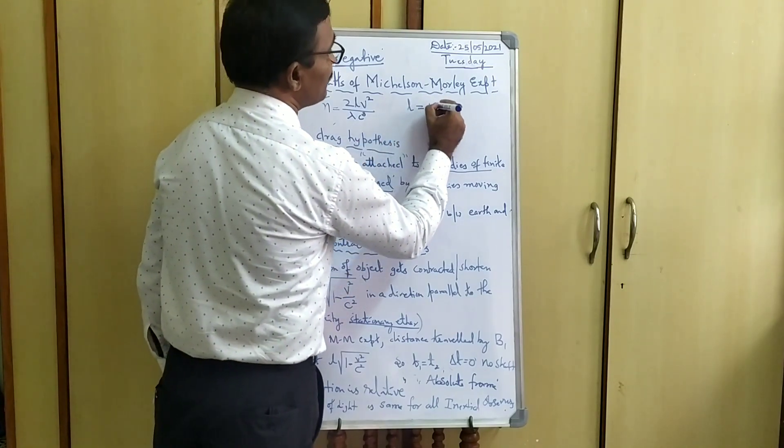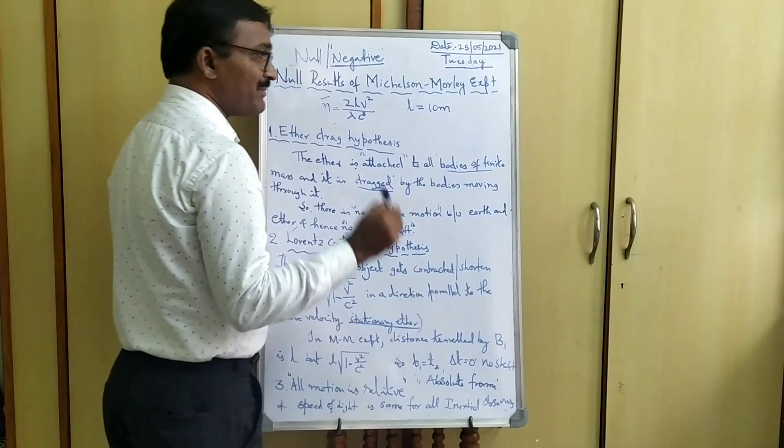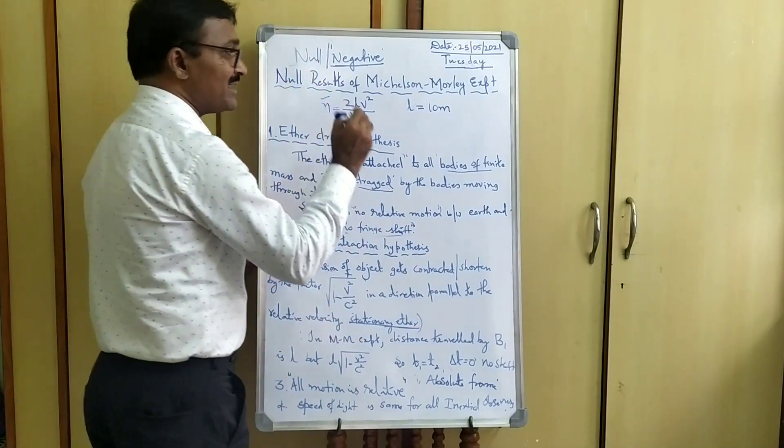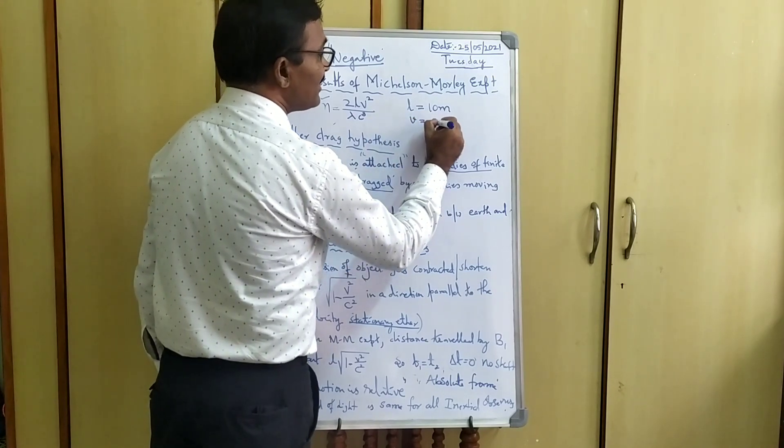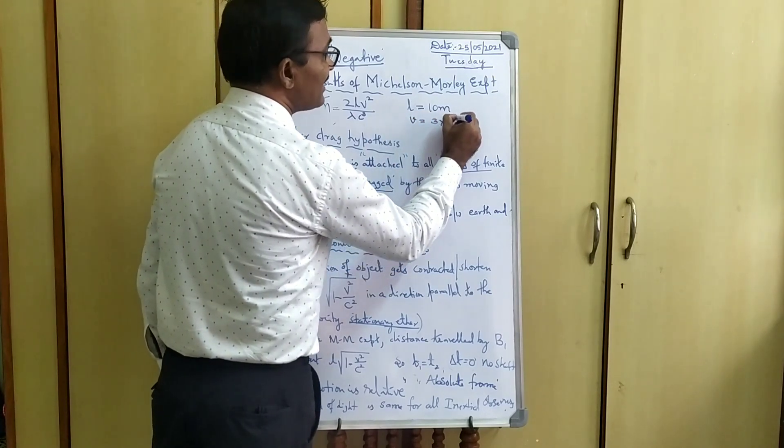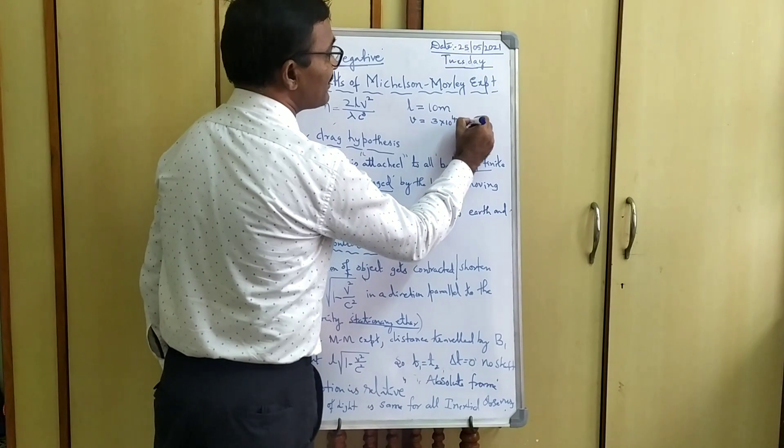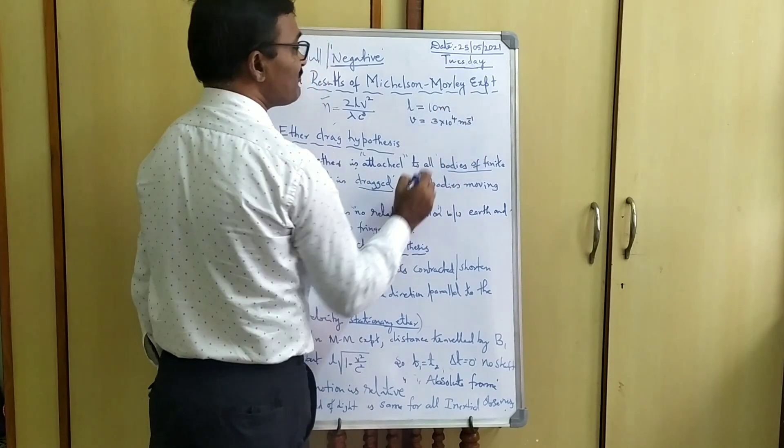That is equal to 10 meters, taken in the Michelson-Morley Experiment. V is the velocity of the earth through the stationary ether, that is 3 times 10 raised to plus 4 meters per second.